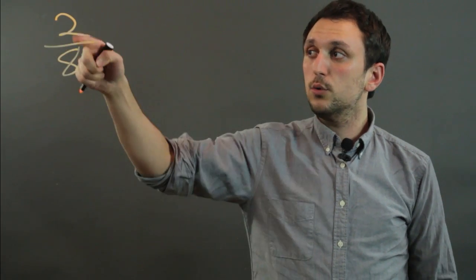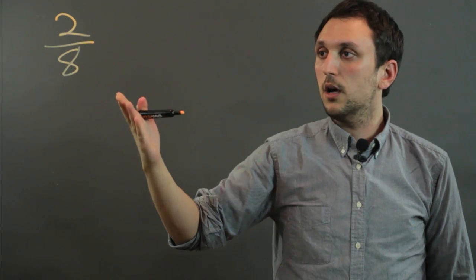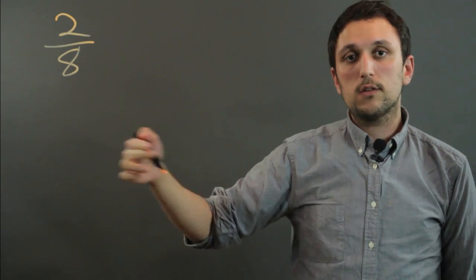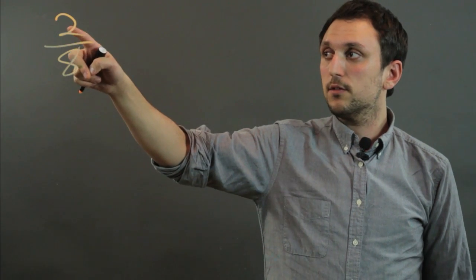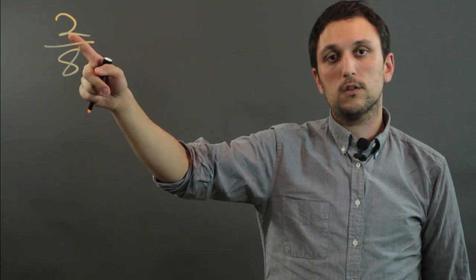But let's take a simple fraction like 2 over 8. Now 2 over 8, think about it like a pizza pie. So you have 8 slices in a pizza pie, and this is like saying you have 2 of those slices.